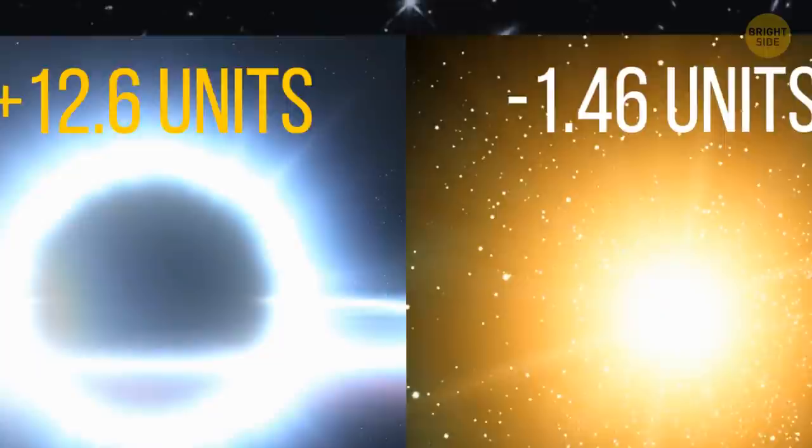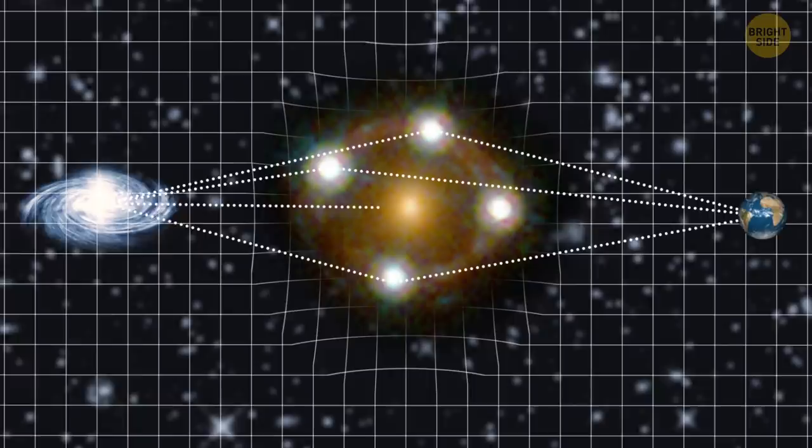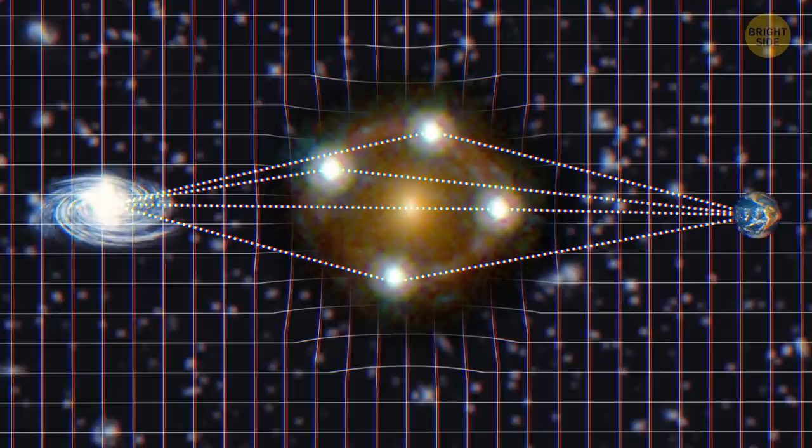A beam of light flies to a galaxy 400 million light-years from Earth and begins to warp. We, as observers, see the result. Four bright points and the galaxy lens itself in the center.